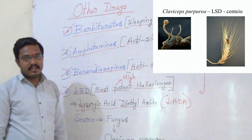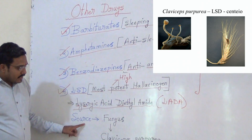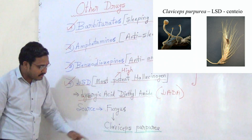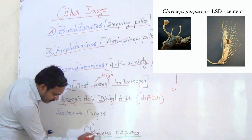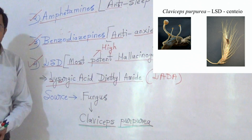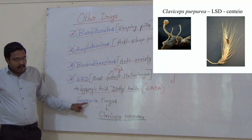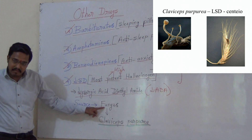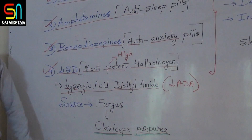LSD is extracted from a fungus. The name of that fungus is Claviceps purpurea — this is very important. Remember: Claviceps purpurea. So lysergic acid diethylamide is extracted from the fungus Claviceps purpurea.